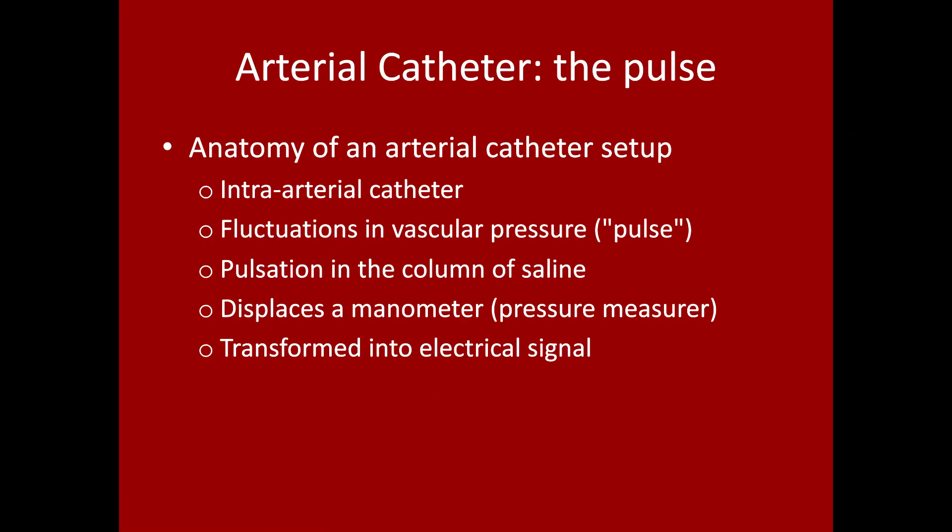This device can measure fluctuations in vascular pressure, which we'd call the pulse. This pulsatile movement of fluid causes fluctuations in a column of saline that we attach our catheter to. This column of saline filling the tubing displaces a manometer, or pressure measure.